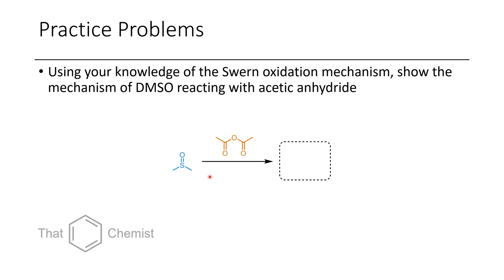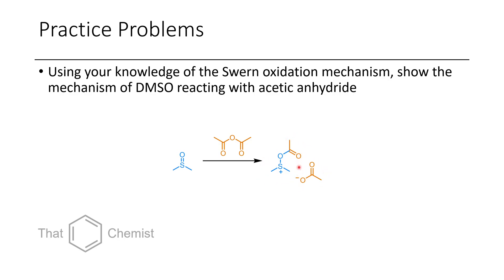In the next problem, I asked you to show what reaction occurs with DMSO in the presence of acetic anhydride. Here we can see the formation of this acyl sulfoxonium with the acetate as a counterion. Comparing this to a typical Swern oxidant — the Swern oxidant will have a chloride — whereas in this case, instead of having a Cl as our leaving group, we have this acetate.